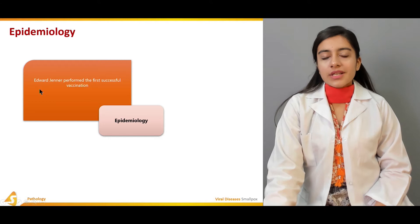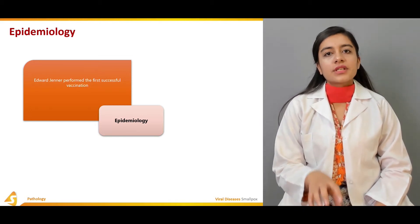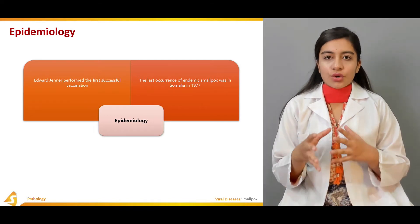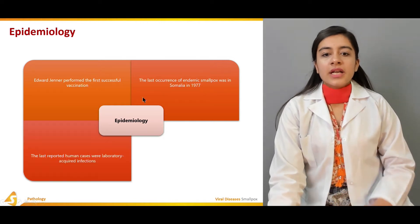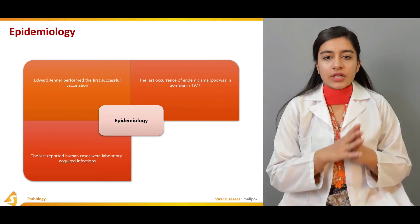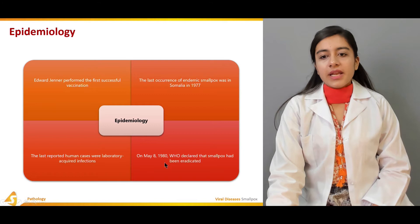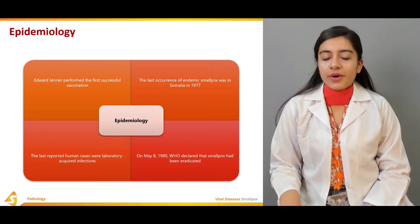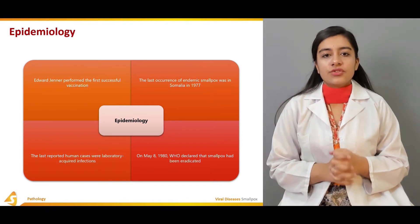Regarding epidemiology, the vaccination against smallpox was discovered and the first successful vaccination was performed by Edward Jenner. The last case of smallpox was seen in Somalia in 1977, after which cases affecting humans were only observed due to laboratory-acquired infections. On May 8th, 1980, WHO declared the world free from smallpox — eradicated through the efforts of Edward Jenner.